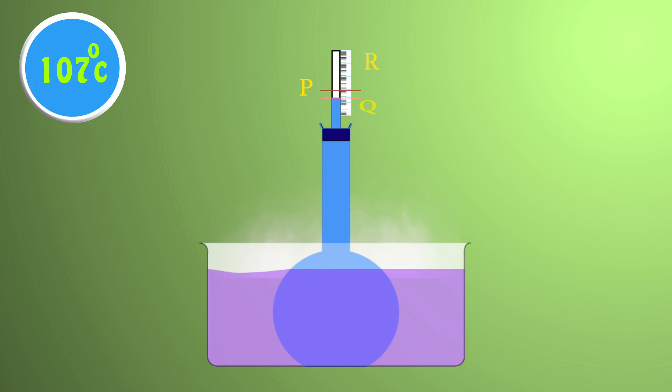After some time, liquid starts gaining heat. It expands more than the vessel. Hence, its level in the capillary tube rises to R.